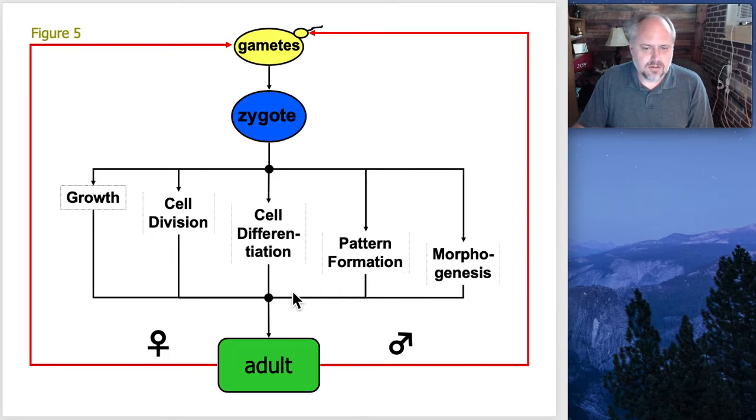Tying off our life cycle, once we become the adult we create our own gametes, these circle back around and start the process all over again for the next generation.